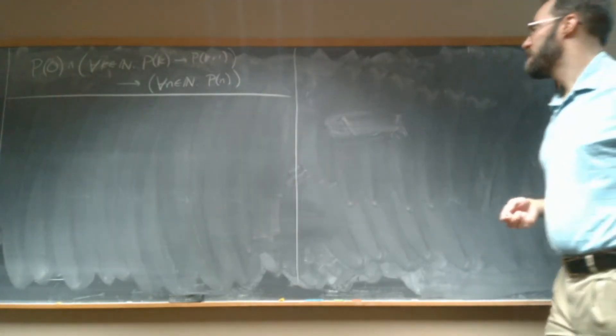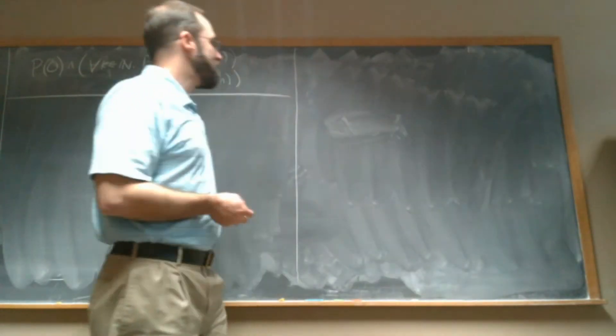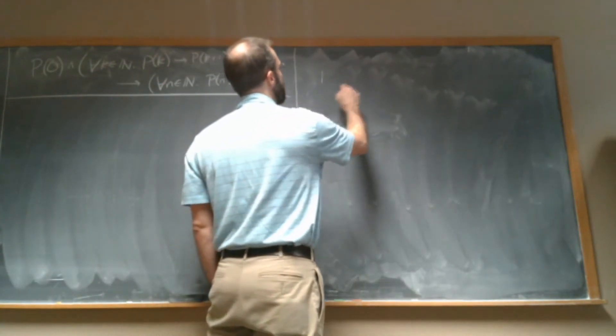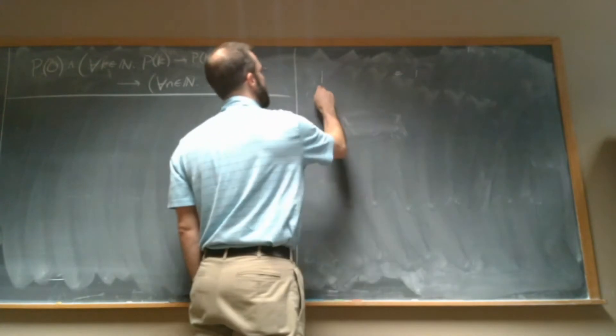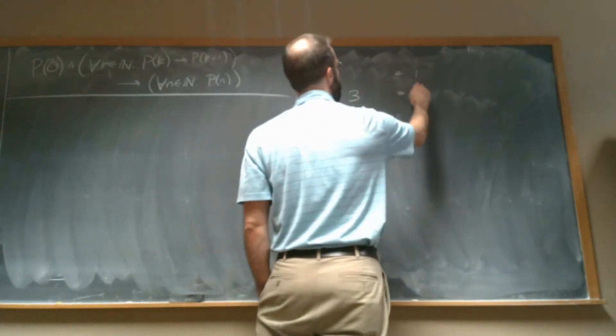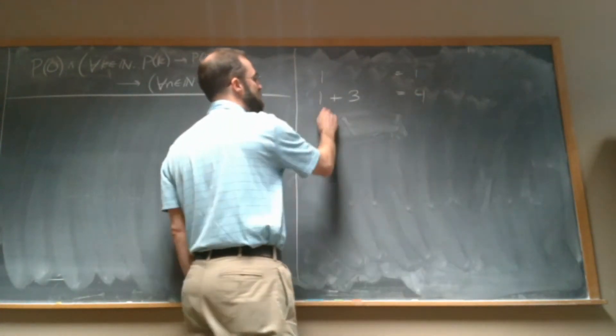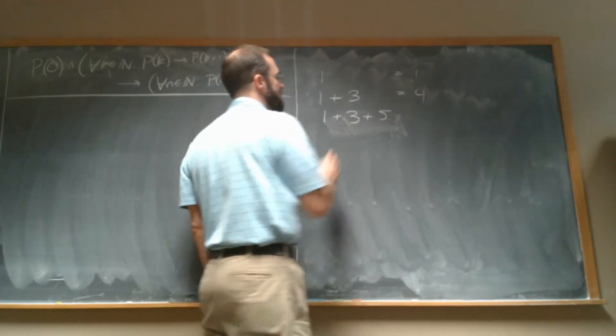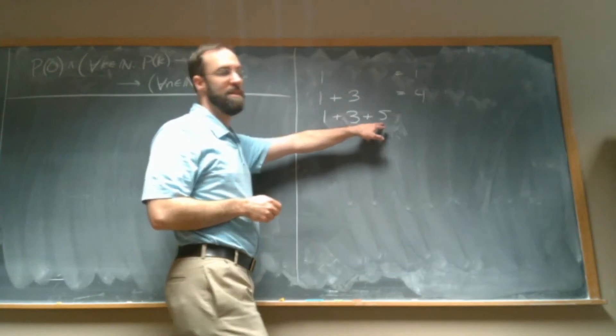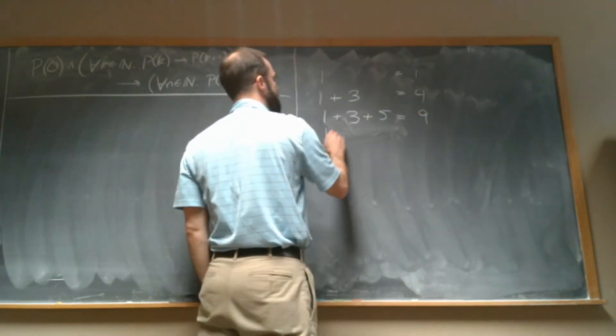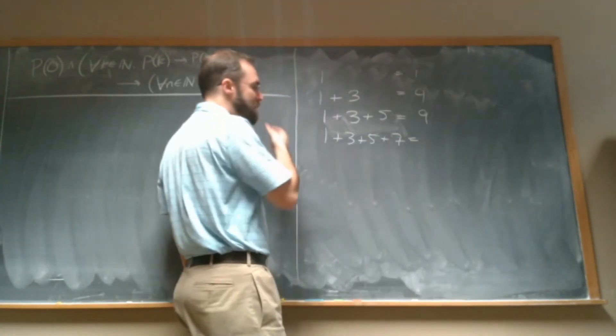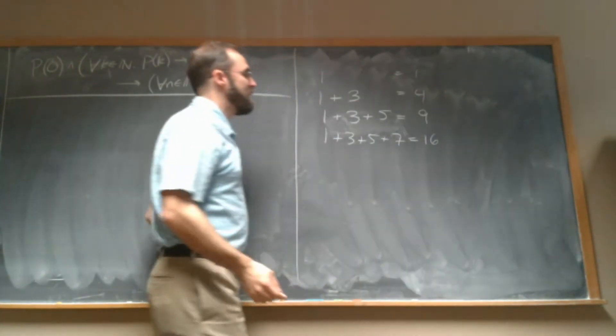So let's suppose that we were writing down, just for fun, adding up some odd numbers. So if I say just one by itself is one, if I add up the first two odd numbers, I'm gonna get 1 plus 3 is 4. And if I add up three odd numbers, I'm gonna get 1 plus 3 plus 5, which is 9. If I add up four odd numbers, 9 plus 7 is 16.